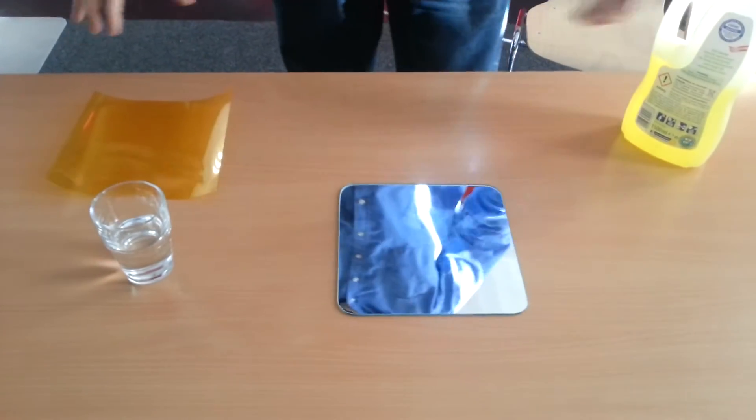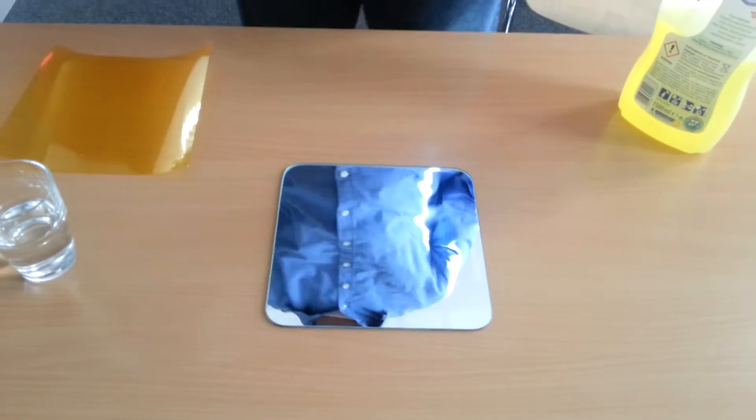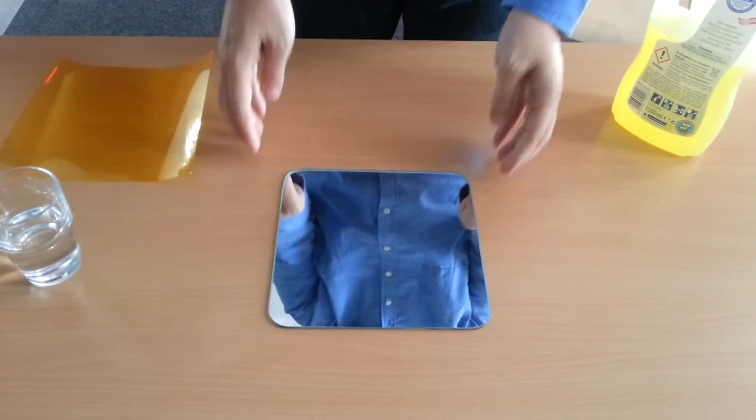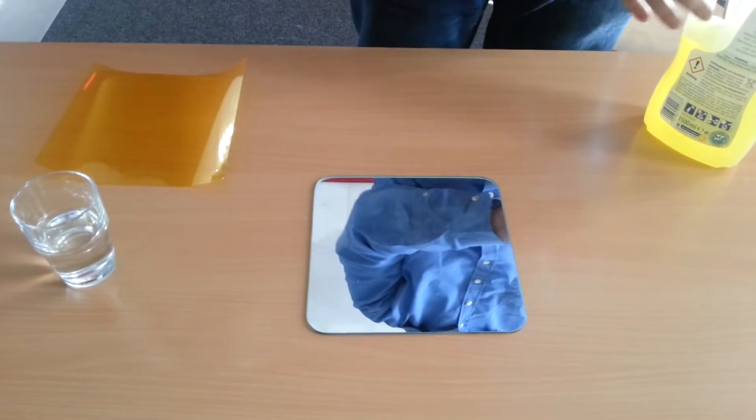Today we are going to apply a new Kapton foil for our 3D printing pad. Luckily we have a printer where we can remove our pad, so it's fairly easy. Otherwise we would have to move it down from the printer to get access.